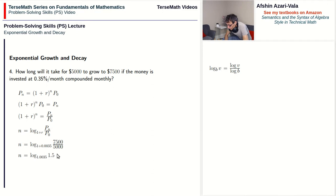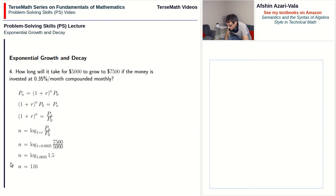We find log of 1.5 divided by log of 1.0035, and n becomes 116 terms. In this case, because one term equals one month, we're talking about 116 months.